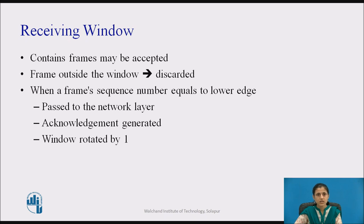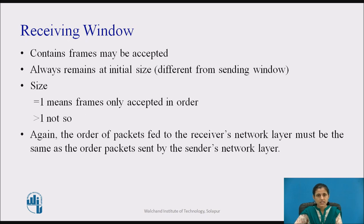The receiving data link layer's window corresponds to the frames it may accept. Any frame falling within the window is put in the receiver's buffer. When a frame whose sequence number equals the lower edge of the window is received, it is passed to the network layer and the window is rotated by one. Any frame falling outside the window is discarded, and in all cases a subsequent acknowledgement is generated so that the sender may work out how to proceed. A window size of one means the data link layer only accepts frames in order, but for larger windows this is not so. The network layer is always fed data in the proper order regardless of the data link layer's window size.